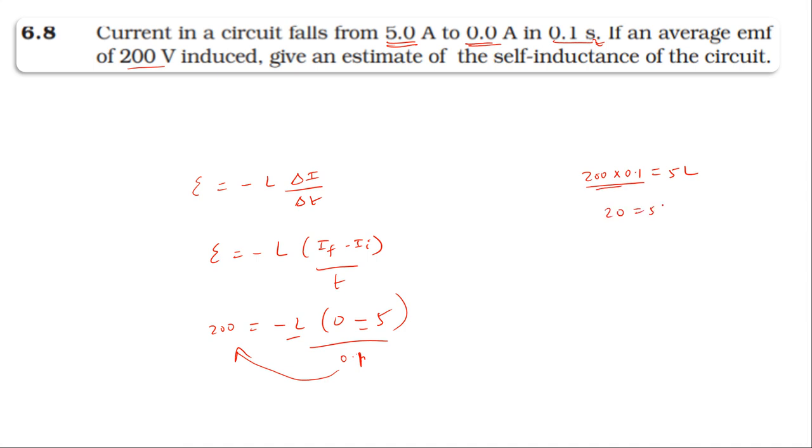Twenty divided by five equals four, so five cancels, and this equals four. So the self-inductance is 4 Henry.